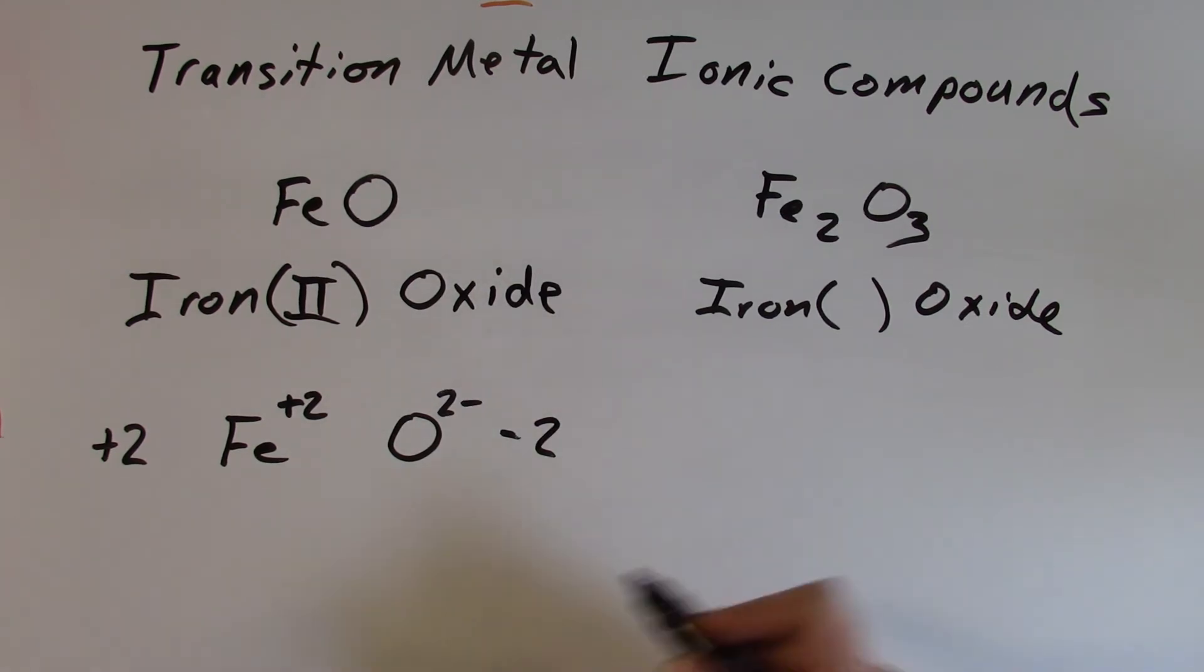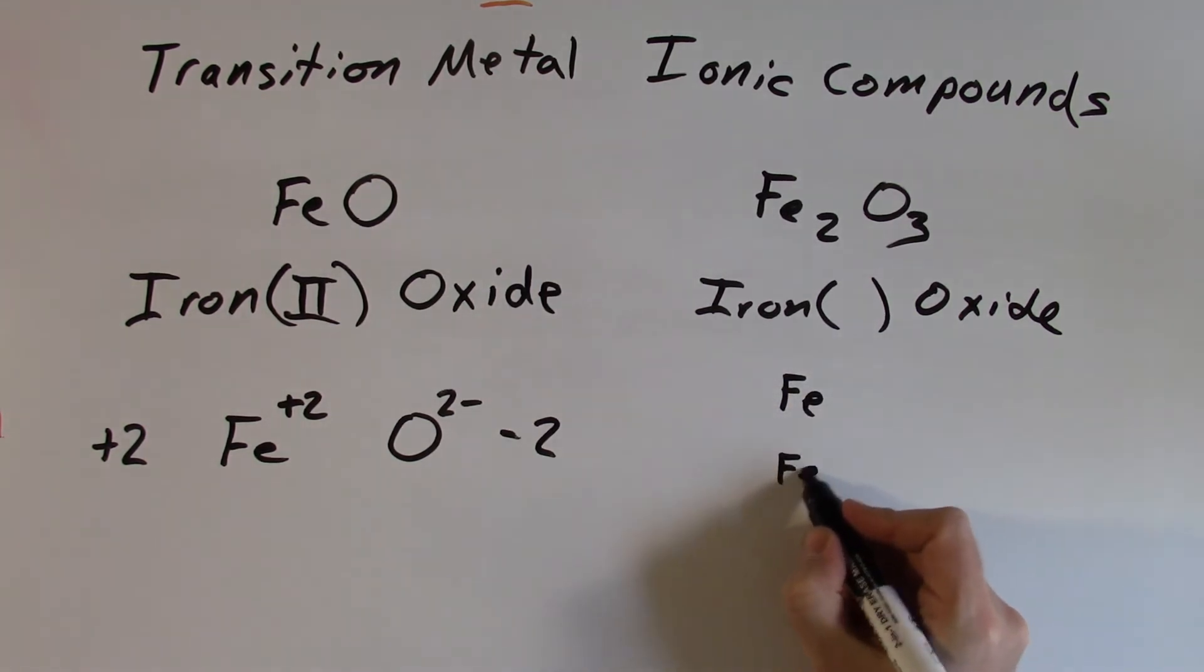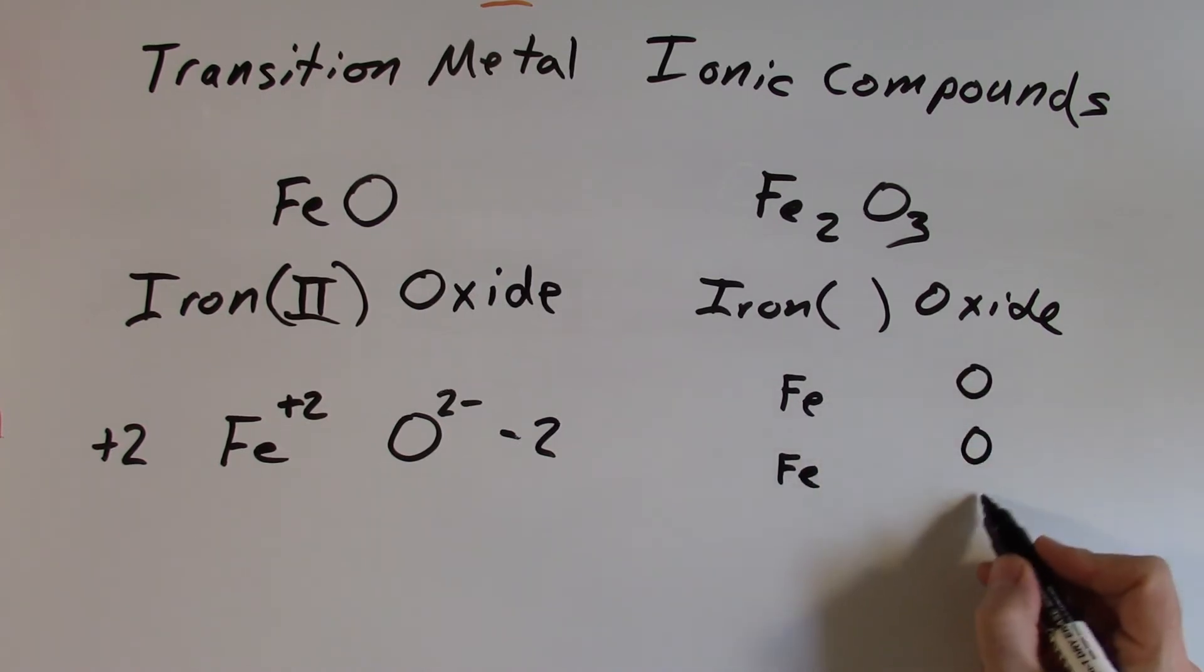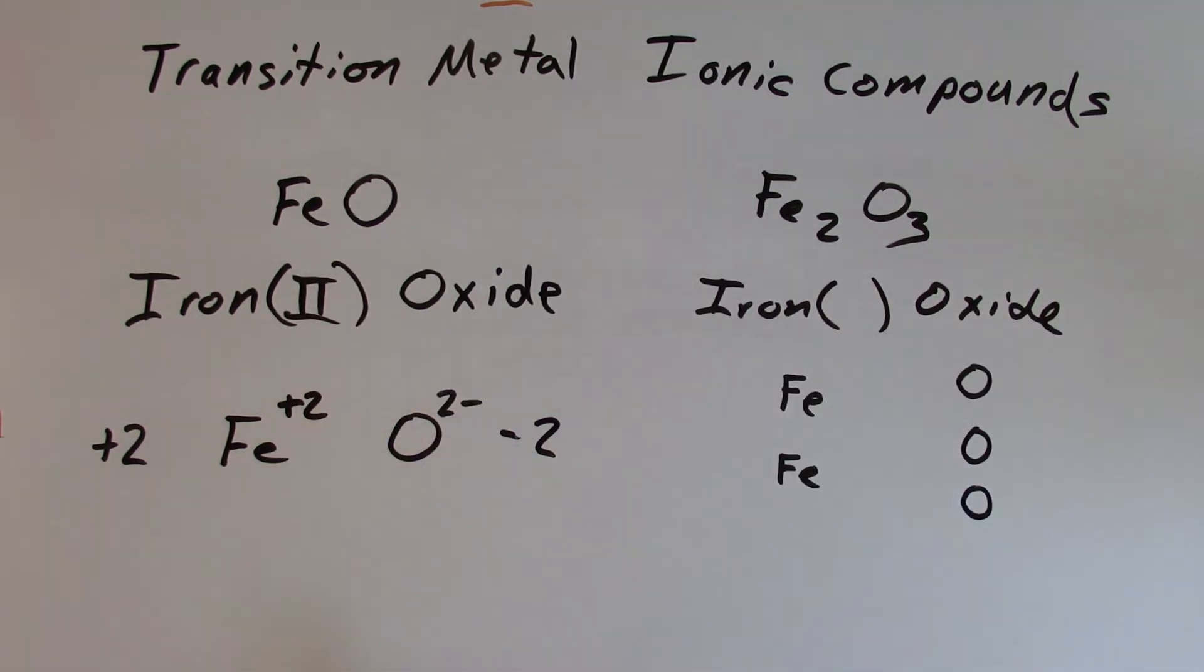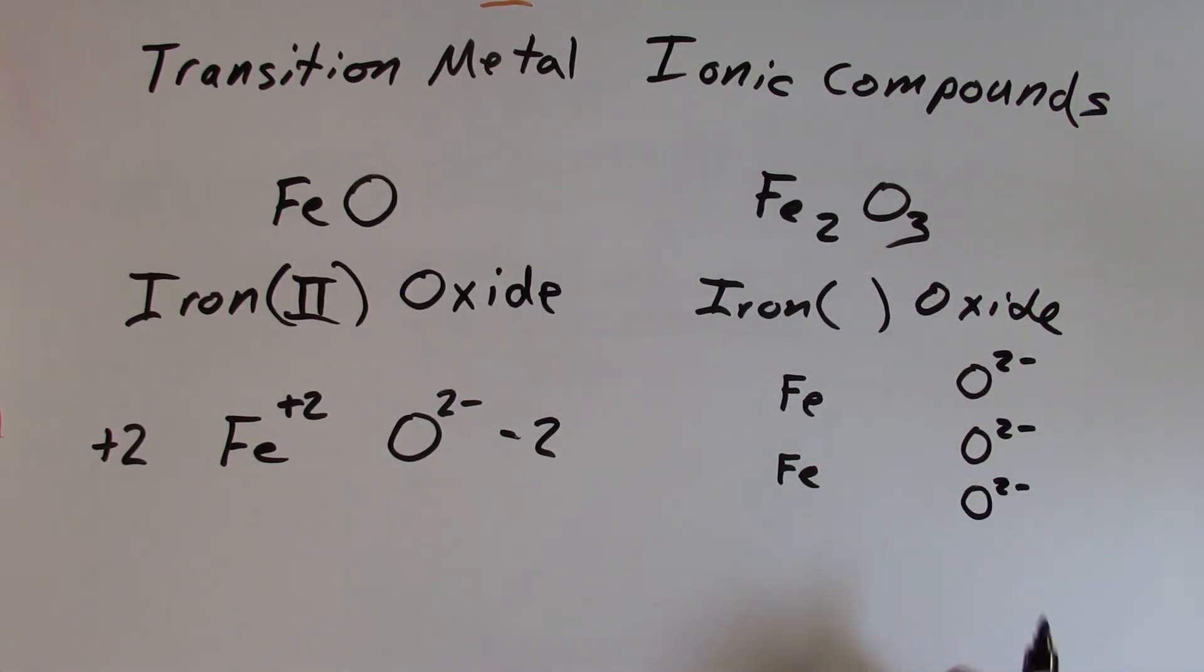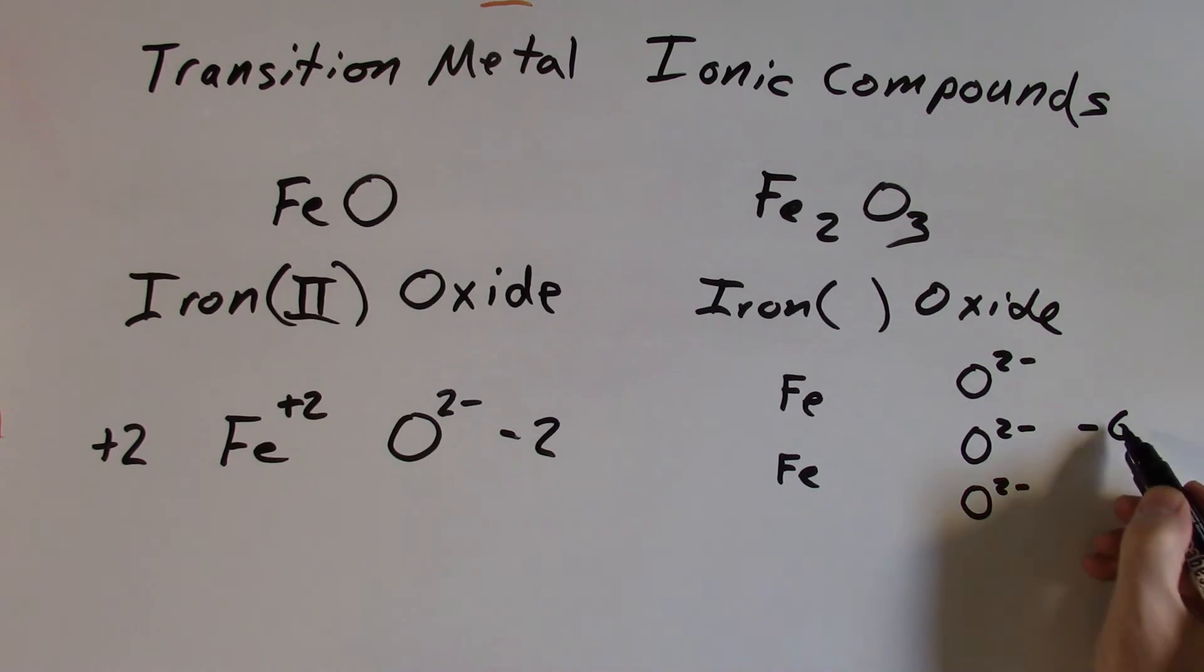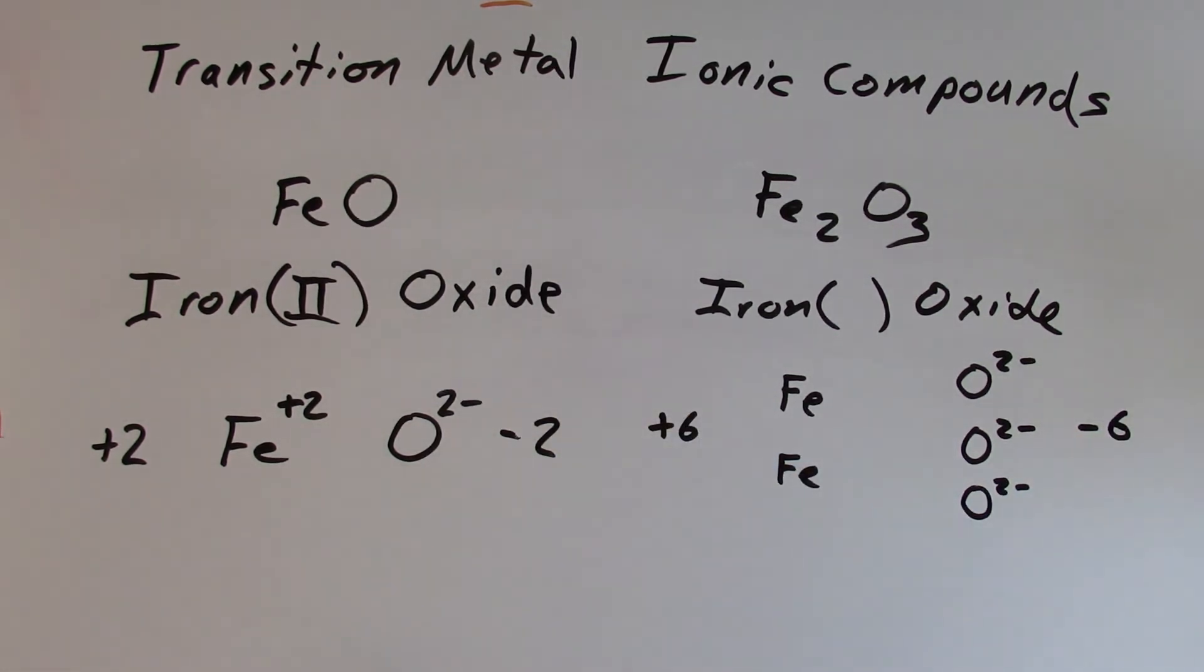And if we come over to this one, works the same way. I've got two iron atoms, however, this time. So one, two iron atoms there, and three oxygens. So one, two, three oxygens. We said each oxygen, just like over here, each oxygen is going to have a negative 2 charge. So negative 2, negative 2, negative 2. So again, we need the positive and negative charges to equal out here. So I have 2, 4, 6 negative charges. So a total of minus 6 for that.